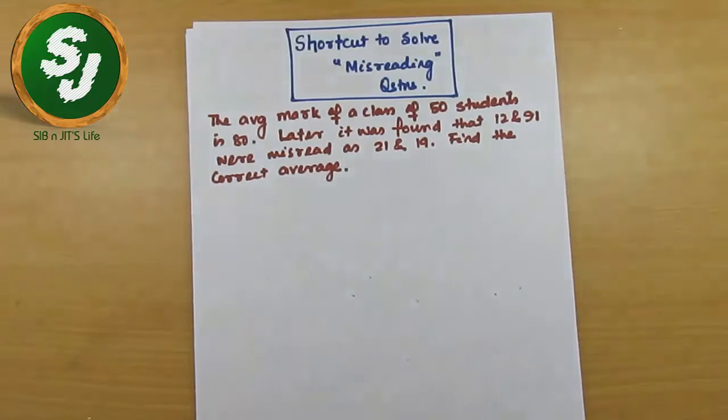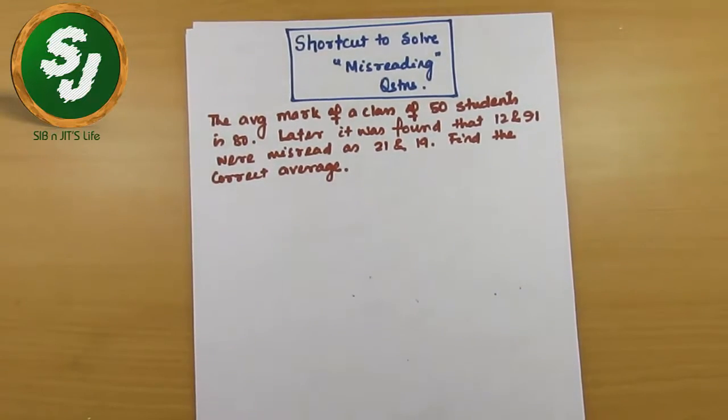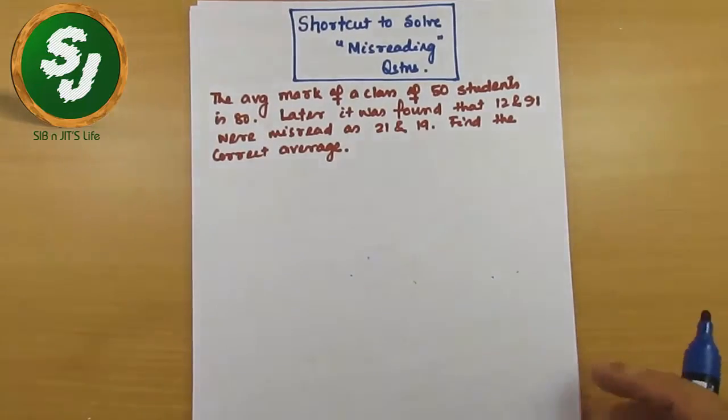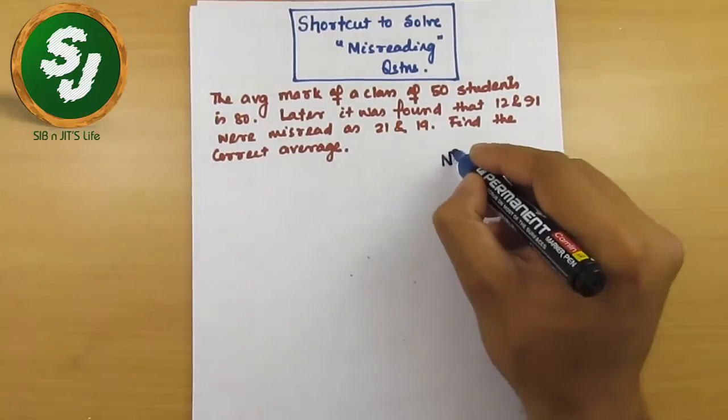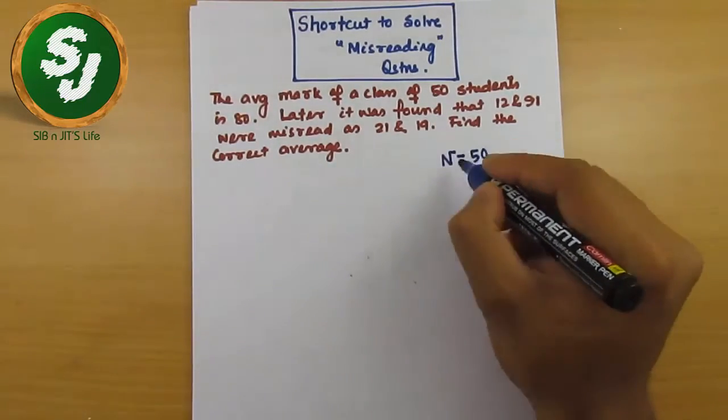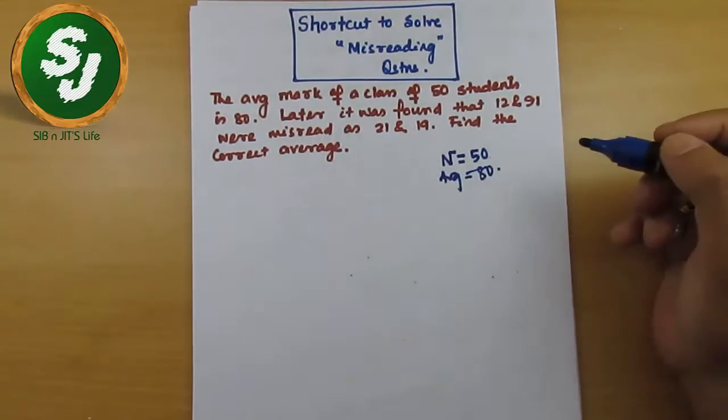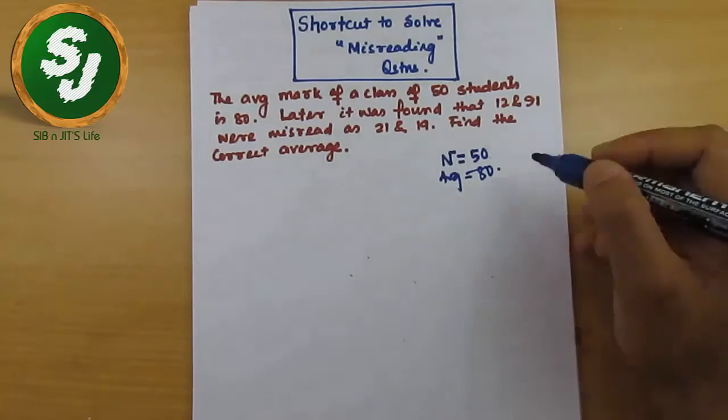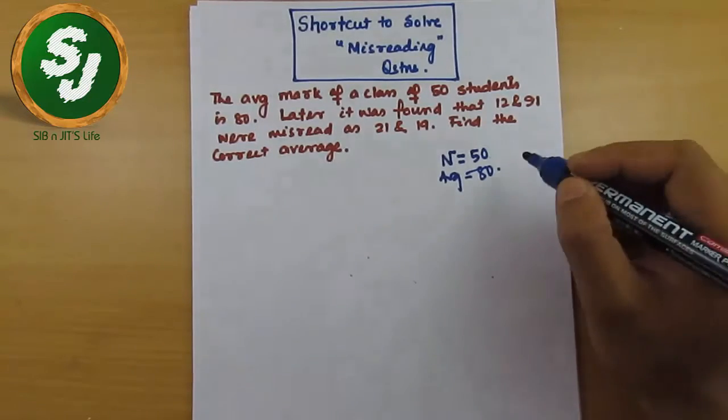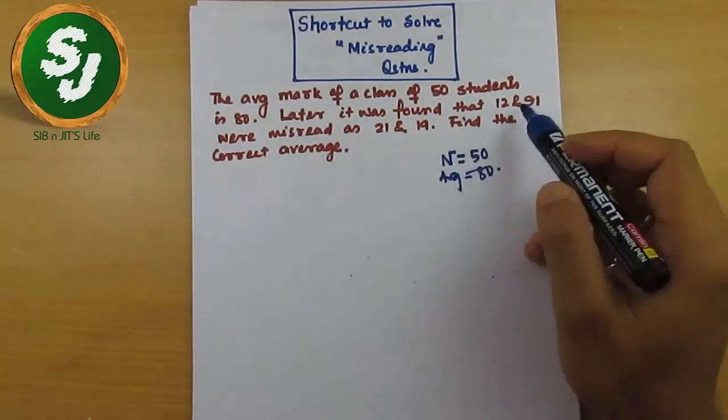Later it was found that 12 and 91 were misread as 21 and 19. Find the correct average. In this part, you have to do one thing: just note it down, n equals 50 and average equals 80. Keep it in your mind or write it somewhere in your answer sheet. This will be used later.